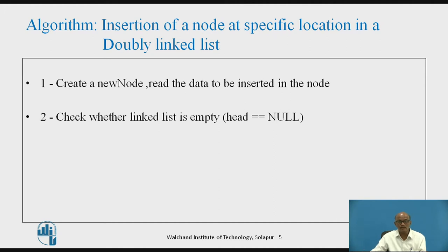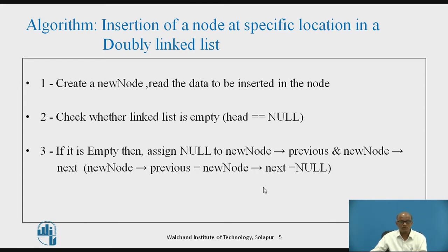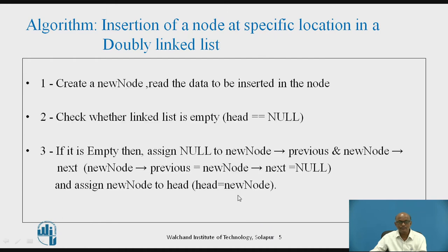Secondly, we will check whether the list is empty or it has some nodes. How to check if the list is empty: if the head is equal to null, that is the address of the first node is null, then we say it is empty. If it is empty, then the created node will be the first node of the list. In a doubly linked list we have two pointers — previous and next — both will be made null. Then we assign the address of the new node to head, so that head holds the address of the first node.